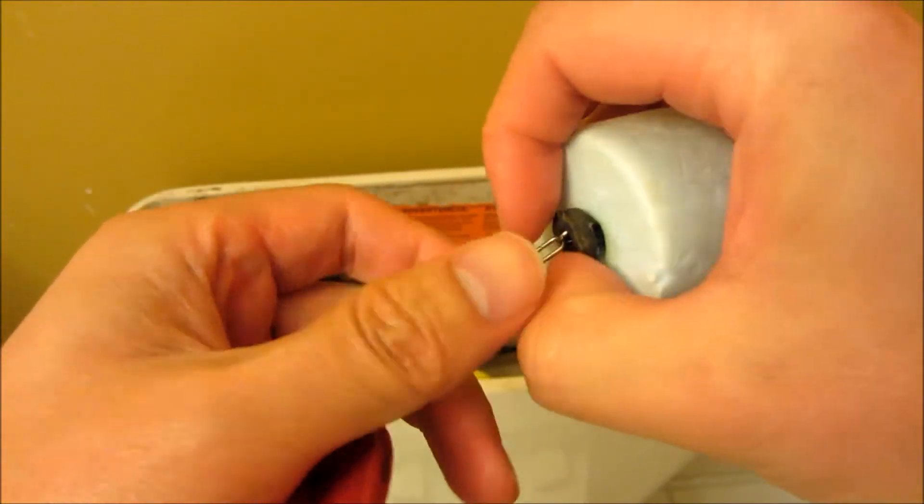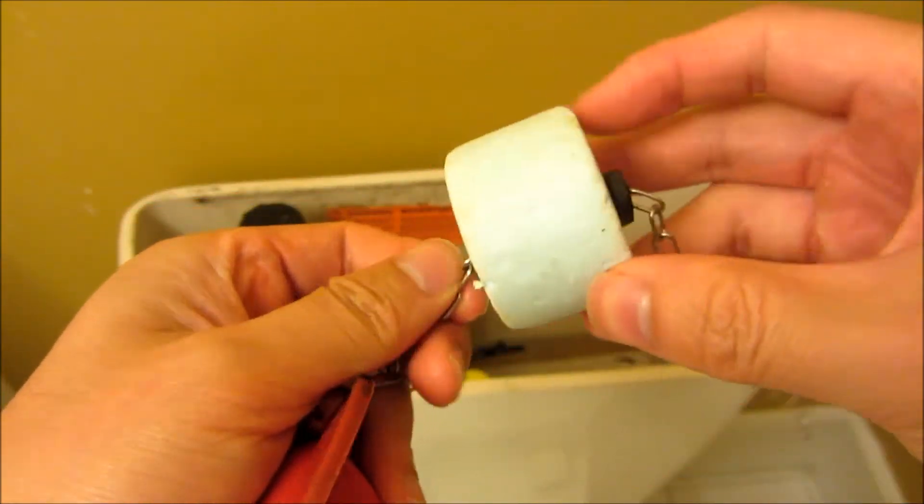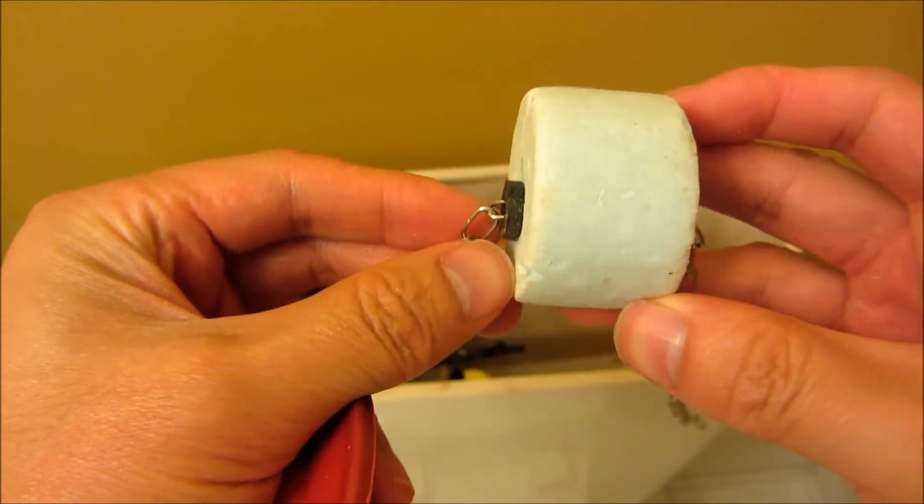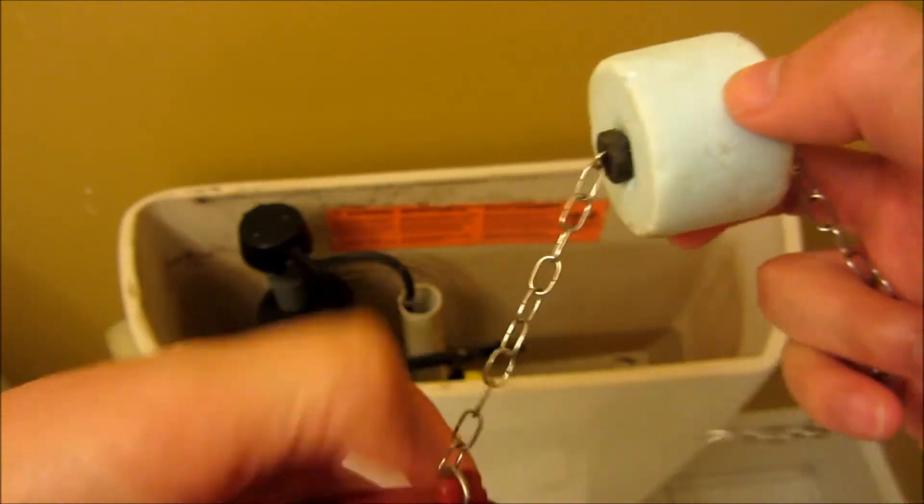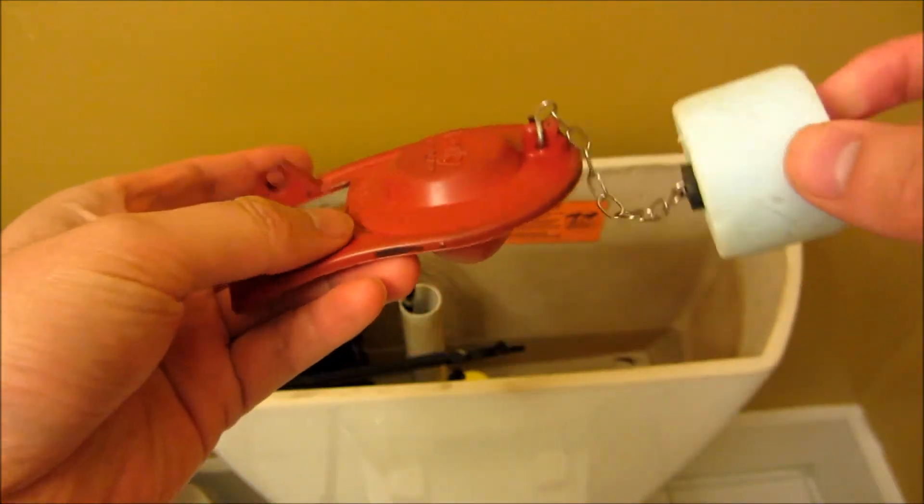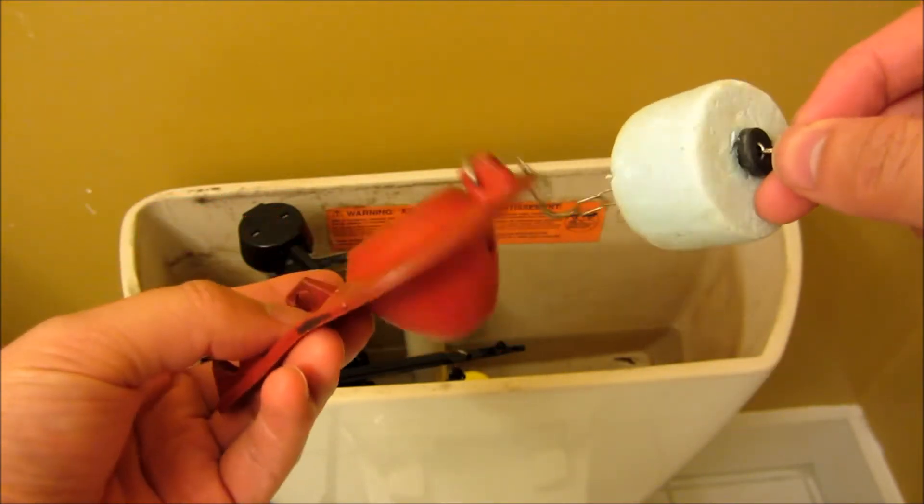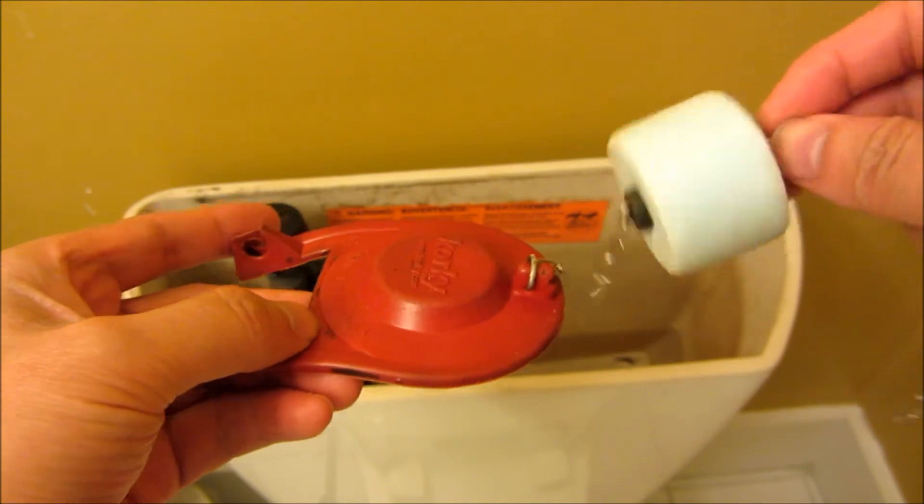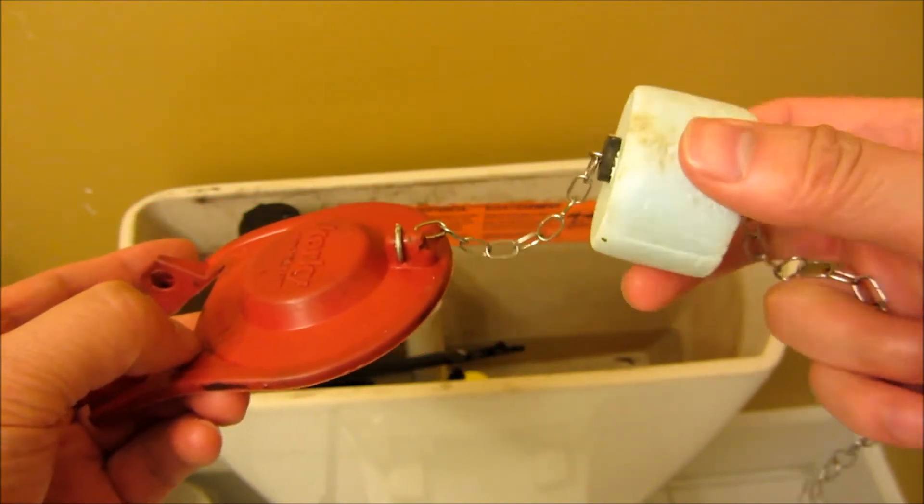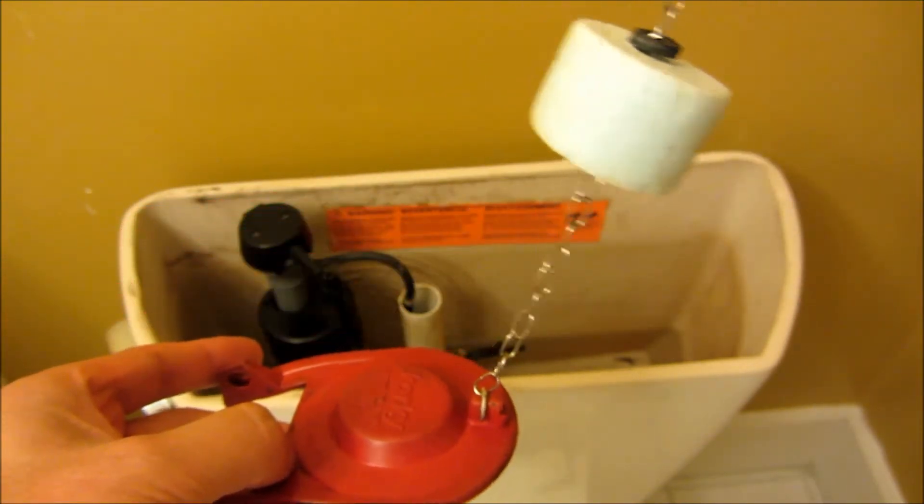So there's two situations: either there's too much water entering the toilet bowl, in which case you will move this higher along the chain, but if there's not enough water entering, meaning this thing's closing too fast, you move this float towards the flapper.